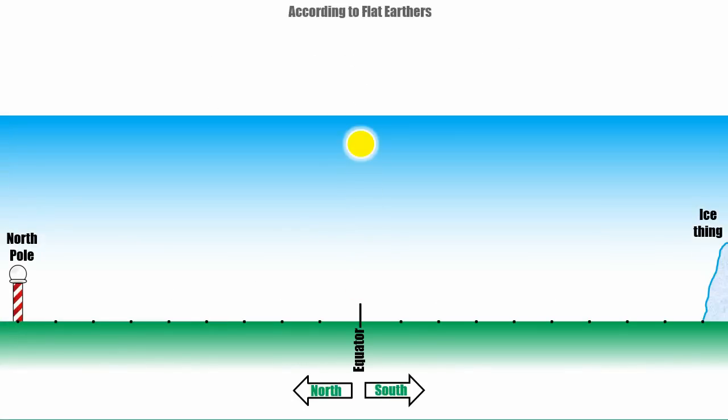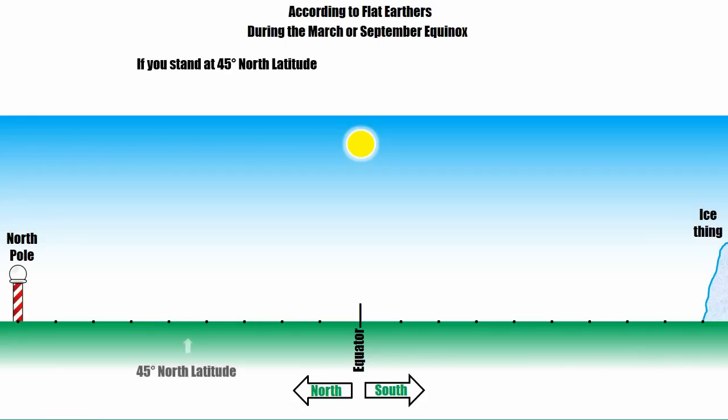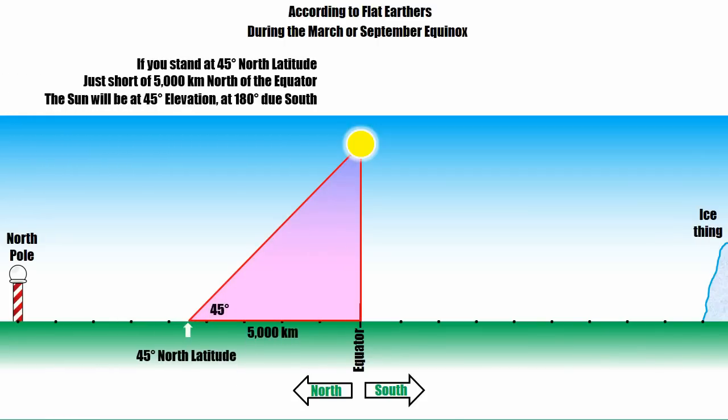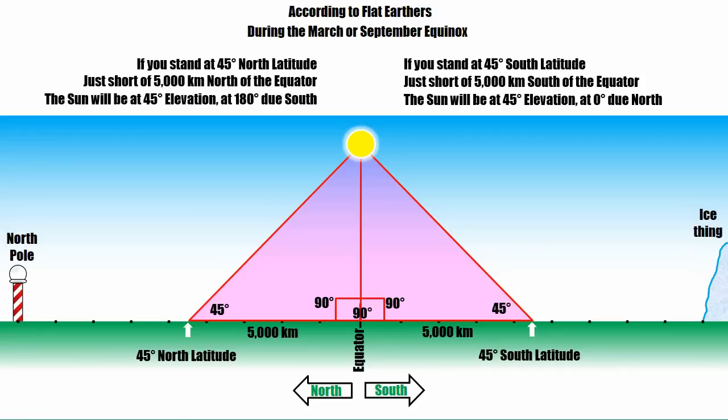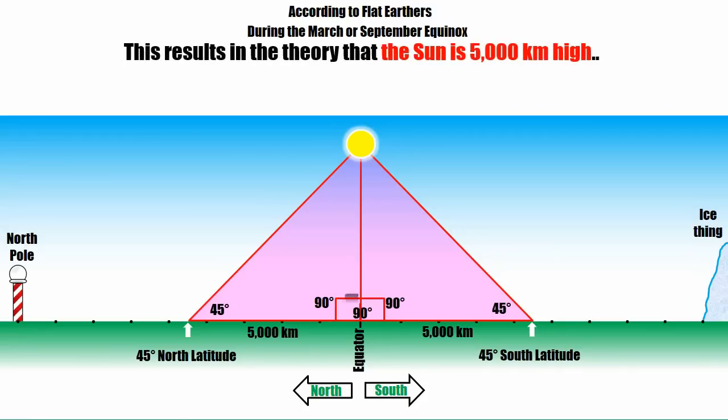According to flat earthers, during the March or September equinox, if you stand at 45 degrees north latitude, just short of 5,000 kilometers from the equator, the sun will be at an elevation of 45 degrees at 180 degrees due south. If you stand at 45 degrees south latitude, also just short of 5,000 kilometers south of the equator, the sun will be at 45 degrees elevation at 0 degrees due north. When you create the triangles for this, it results in the theory that the sun is 5,000 kilometers high above the surface of the earth.